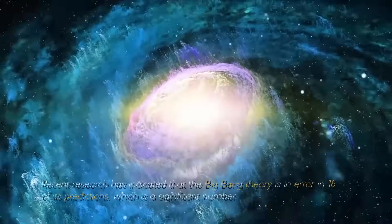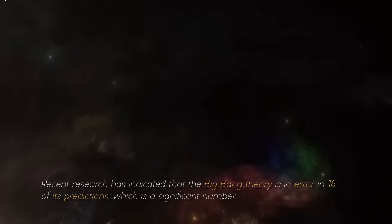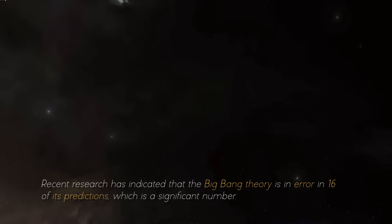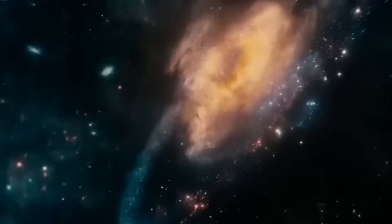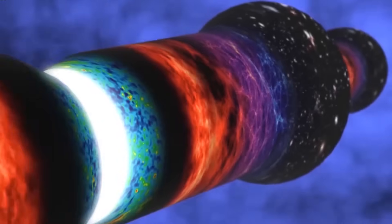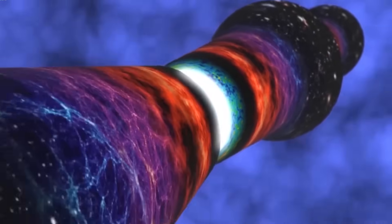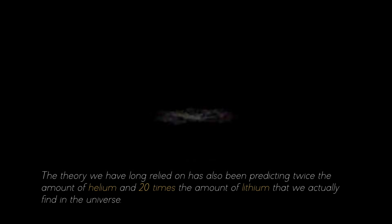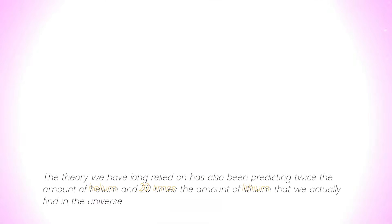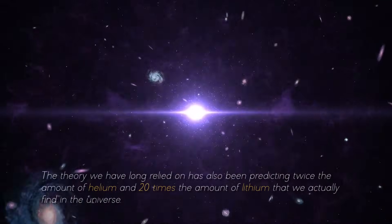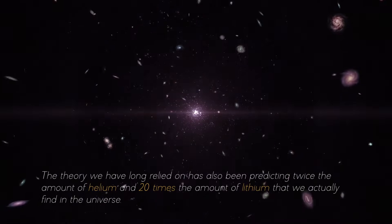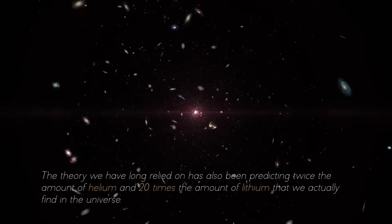Recent research has indicated that the Big Bang theory is in error in 16 of its predictions, which is a significant number. The only prediction that is accurately verified concerned the abundance of deuterium, a type of hydrogen. But that is only the beginning. The theory we have long relied on has also been predicting twice the amount of helium and 20 times the amount of lithium that we actually find in the universe.